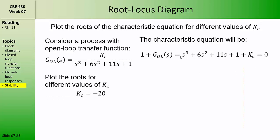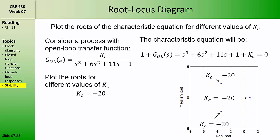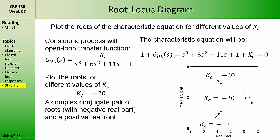We'll start by choosing a very negative value for Kc — in this case, Kc equals minus 20 — and then find the roots of this equation and plot them in the complex plane. Because this is a cubic equation, there are three roots. One of these roots lies on the real axis to the right of the imaginary axis, representing a positive pole for our transfer function, which in the time domain represents an exponentially growing function.